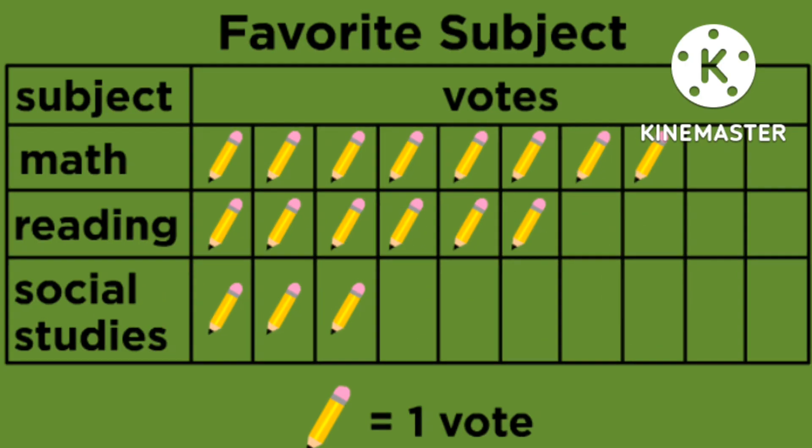Here is another interesting example for pictograph. This chart represents the favorite subjects for the students of a class, and one pencil denotes one vote. From that you can easily calculate the favorite subjects for the students.